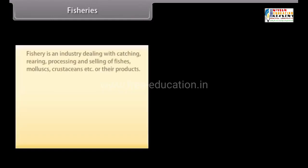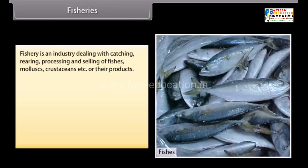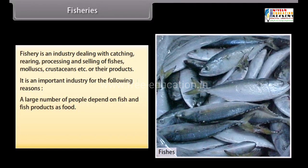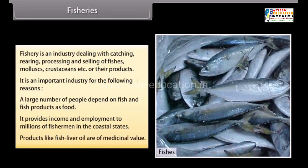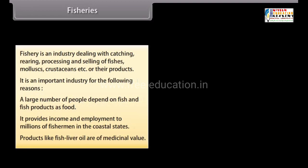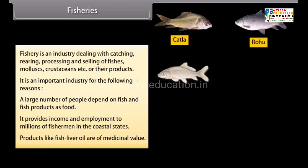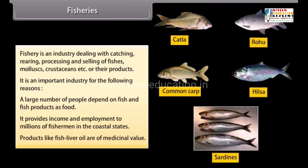Fisheries is an industry dealing with catching, rearing, processing, and selling of fishes, mollusks, crustaceans, etc. It is important because a large number of people depend on fish and fish products as food, it provides income and employment to millions of fishermen in coastal states, and products like fish liver oil are of medicinal value. Some common freshwater fishes are Catla, Rohu, and common carp. Common marine fishes include Hilsa and sardines.